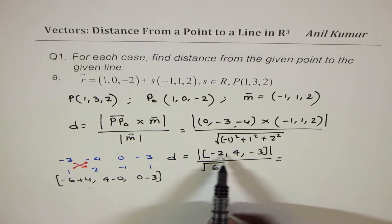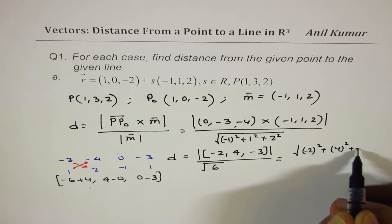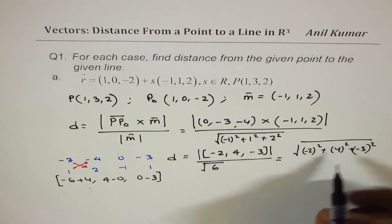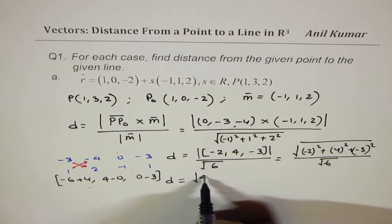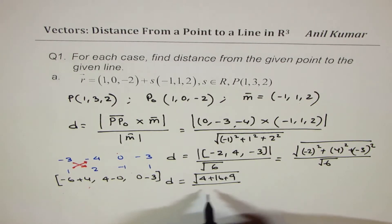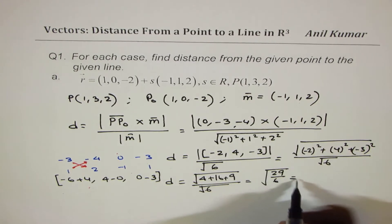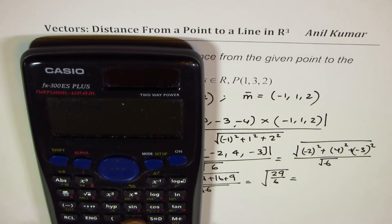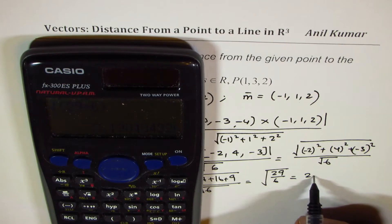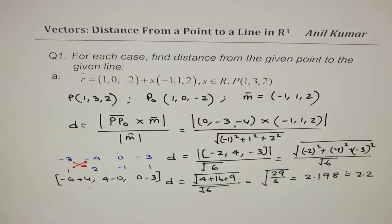So the distance D equals the vector (minus 2, 4, minus 3) in the numerator, divided by the square root of 6. The magnitude of the numerator is the square root of (minus 2) squared plus 4 squared plus (minus 3) squared, which is the square root of 4 plus 16 plus 9, divided by the square root of 6. That gives us the square root of 29 divided by 6, which is approximately 2.198, or about 2.2.